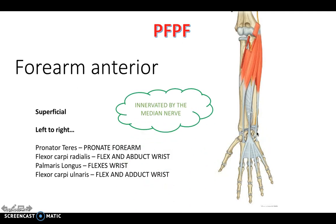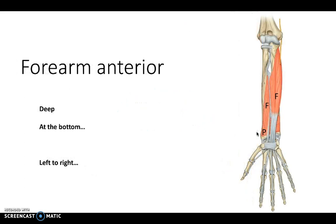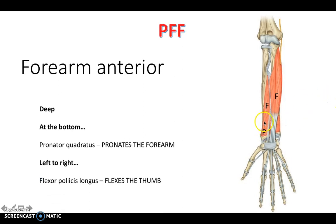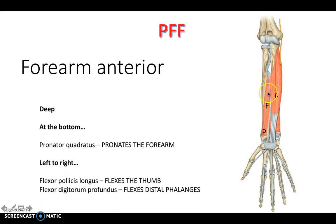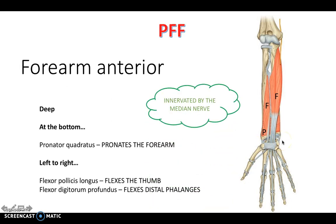The anterior forearm superficial component is innervated by the median nerve. Going deeper, there are three muscles here as well - the common theme with the anterior forearm is they all begin with P or F. At the bottom we have the quadrangular-shaped pronator quadratus, which pronates the forearm. Then we have flexor pollicis longus, which flexes the thumb - pollicis being another word for thumb. And then flexor digitorum profundus, which flexes the fingers. This is also innervated by the median nerve, so the entire anterior forearm is innervated by the median nerve.